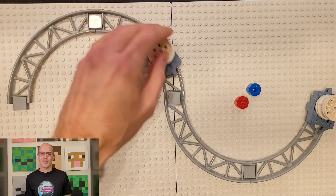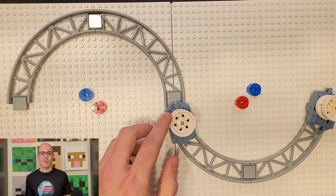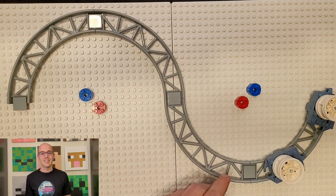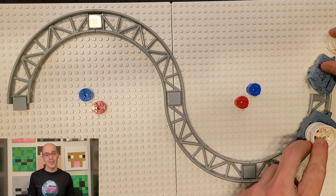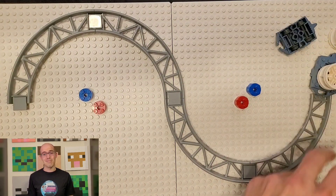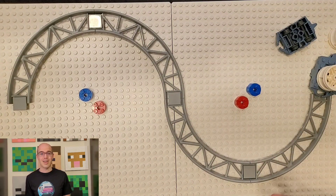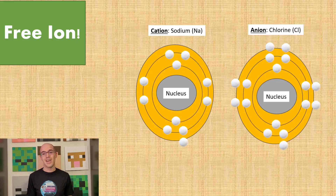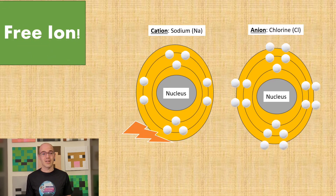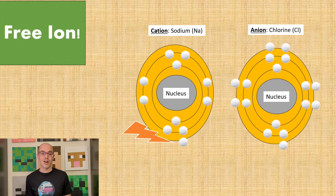And you thought your friend's drama was shocking. So, how does one atom pass an electric charge to another atom? That's where free ions and the conductivity of a material play a part.